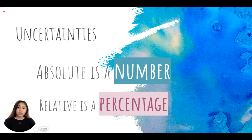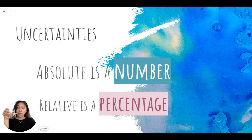In this case, uncertainties as we know them are always going to be represented by a plus or minus sign. After the plus or minus sign, an absolute uncertainty is a value — this is what we're usually used to. For example, a beaker of 25 milliliters of water would have an absolute uncertainty of plus or minus 2 milliliters.